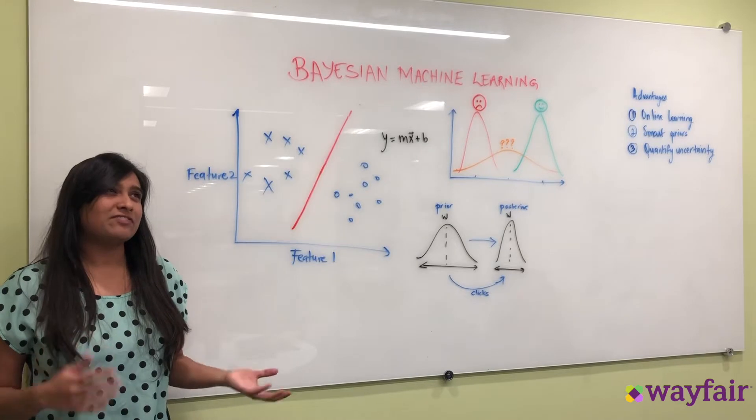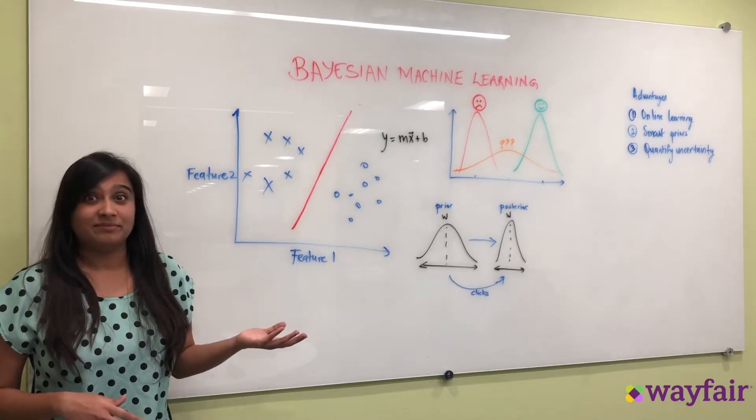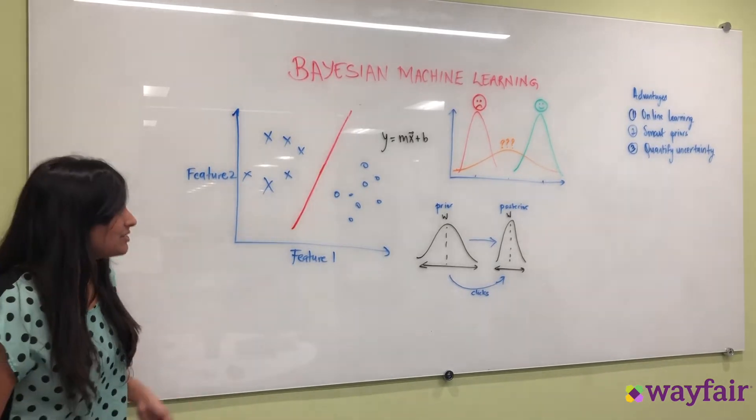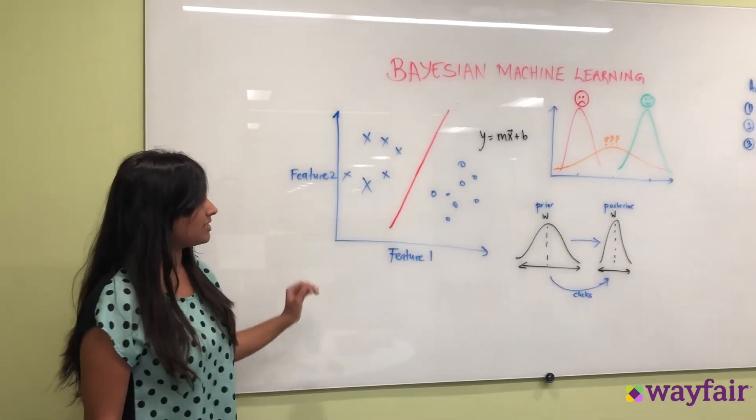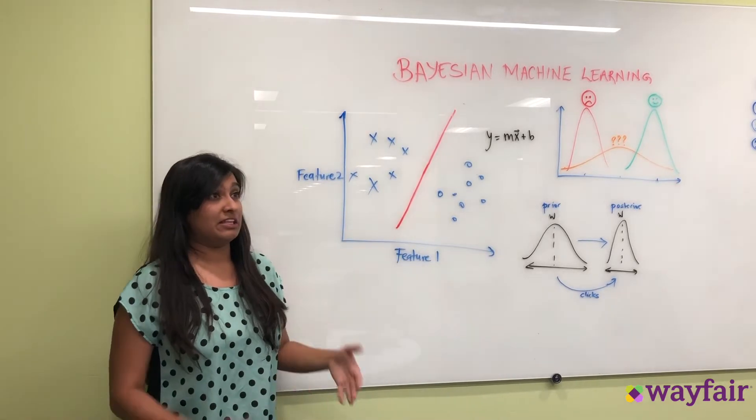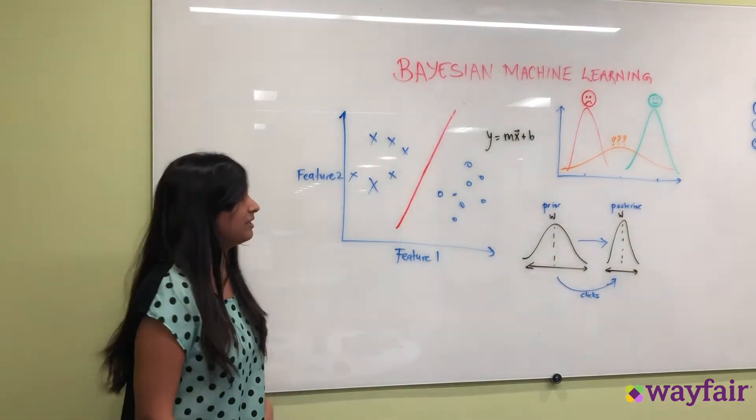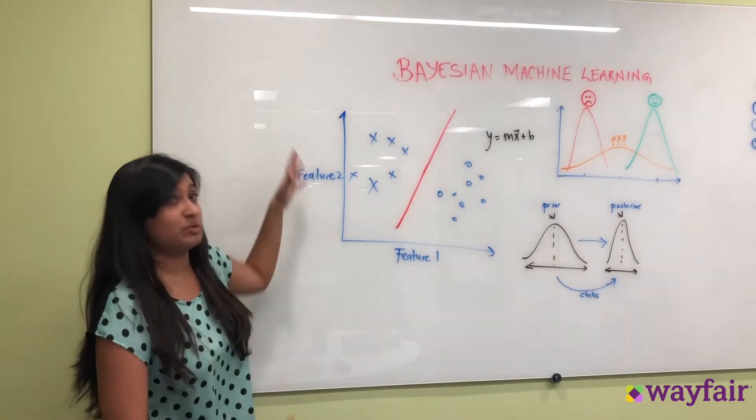Well let's say you want to classify between a hot dog and not a hot dog. So you have a set of points here. Say you have two features representing points and feature one could be the length of the product you're dealing with and feature two could be the squishiness.